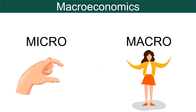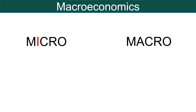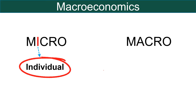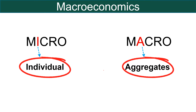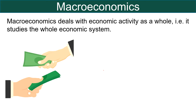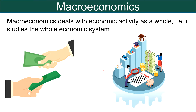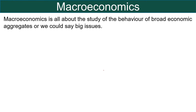Coming to macroeconomics — while micro means small, macro implies large. To be more precise, the 'I' in microeconomics means individual, while the 'A' in macroeconomics means aggregates. Hence, macroeconomics deals with the economic activity as a whole; that is, it studies the whole economic system and addresses the problems faced by the entire economy. In a nutshell, macroeconomics is all about the study of the behavior of broad economic aggregates, or we could say, big issues.